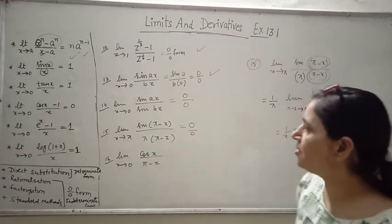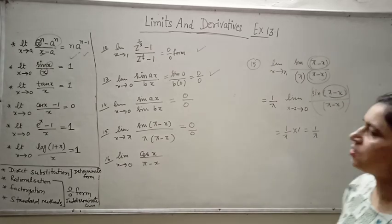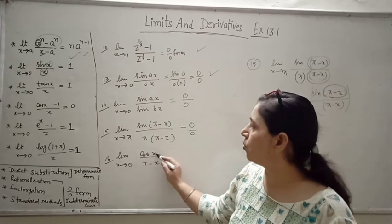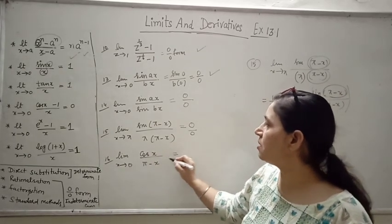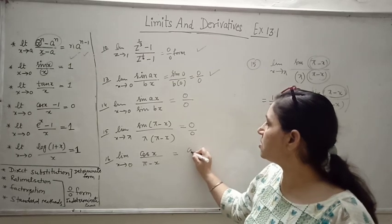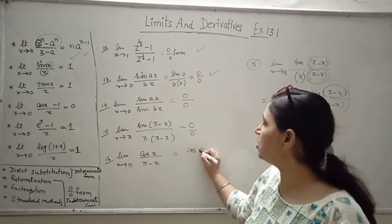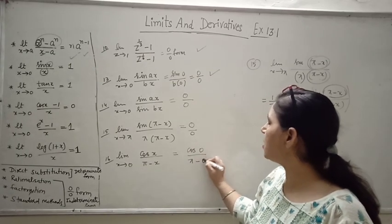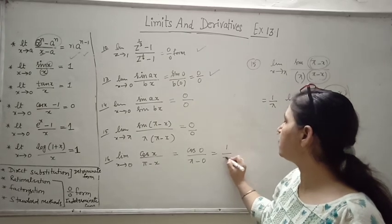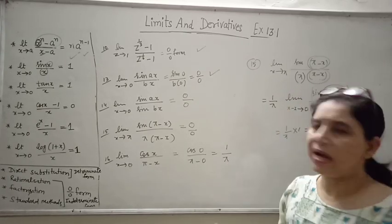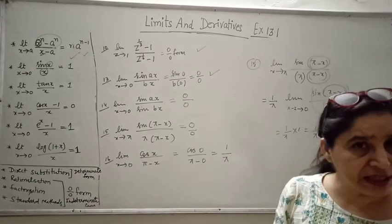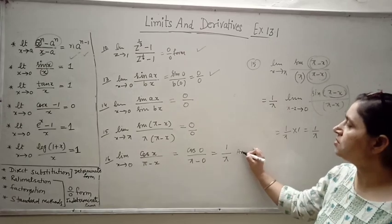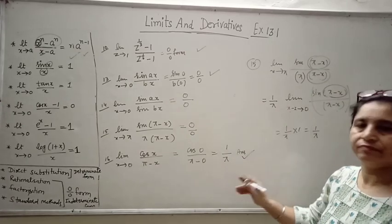Question 16: limit x→0 of cos(x)/(π-x). Putting x=0: cos(0) = 1, and π-0 = π. This is 1/π — not indeterminate form, so no further work needed. The answer is 1/π.